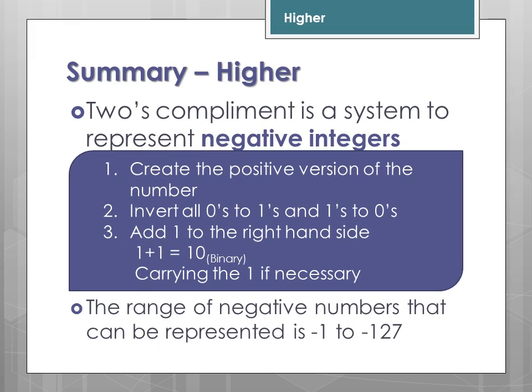So, a summary at higher: 2's complement is a system to represent negative integers. You create the positive version of the number in binary. You invert all the 0s to 1s and the 1s to 0s. You add 1 to the right-hand side, remembering that 1 plus 1 is 0 with carry, so you may need to carry the 1 over if necessary. The range of negative numbers that can be represented using an 8-bit 2's complement system is minus 1 down to minus 127.